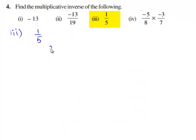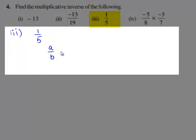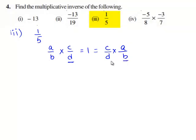For every non-zero rational number a by b, there exists another non-zero rational number c by d such that a by b times c by d is equal to 1, which is equal to c by d times a by b. Here c by d is called the multiplicative inverse of a by b and a by b is called the multiplicative inverse of c by d.